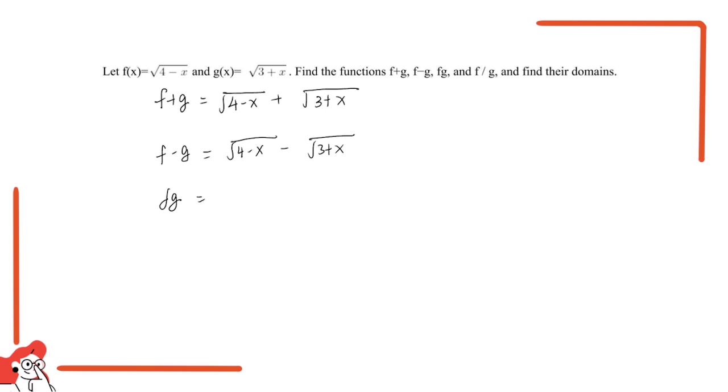f times g is a little bit more complicated. These two can multiply each other. Let's just keep it in this form first. And then we have f over g, which should have square root of 4 minus x over 3 plus x.